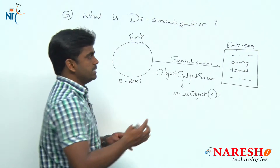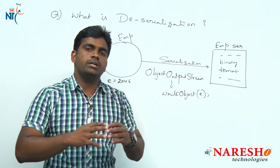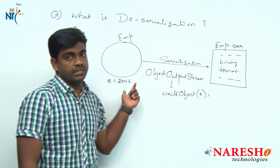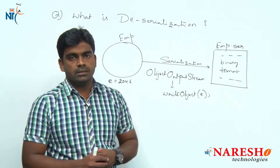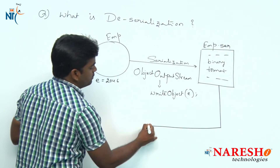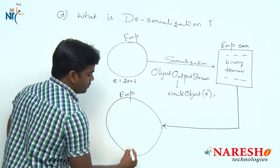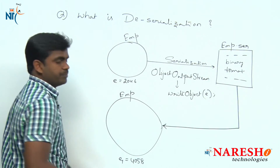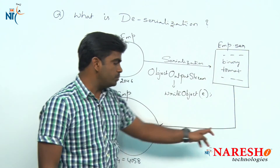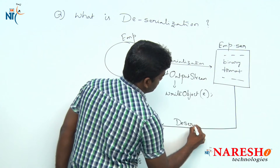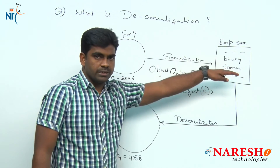Now, deserialization means whatever information has been written in binary format, you can send it over the network or pass it, you can share it to anyone — meaning that serializable file, not the object. We are not passing the object, we are passing that serializable file. Once we pass the serializable file, we are again converting the file into an object — that is nothing but the concept of deserialization. So converting object to file is called serialization; converting file to object is called deserialization. ObjectOutputStream is used to write the information.